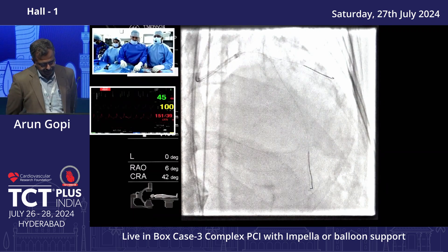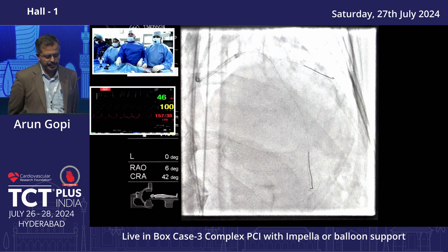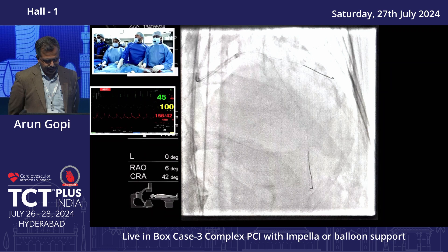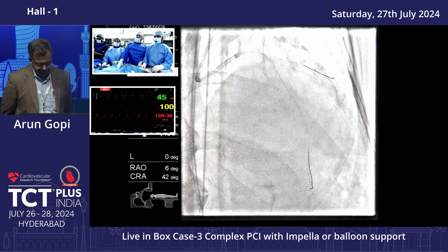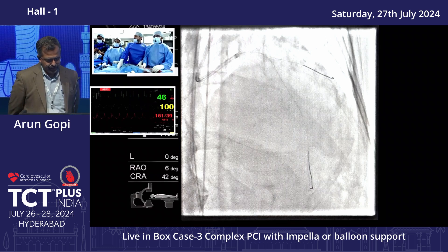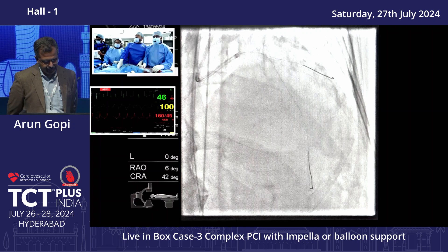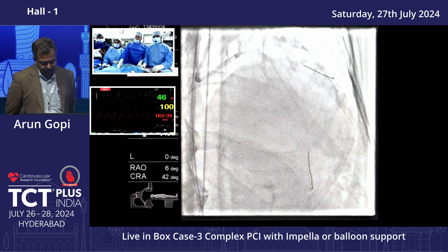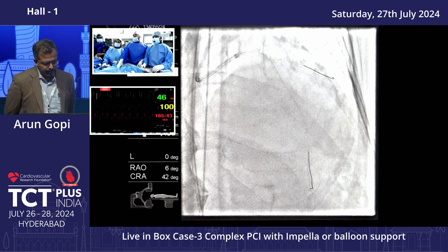We have prepared both the LAD and diagonal with a 2.75 cutting balloon at high pressures. The lesion is opening up well with no residual waist — the calcium has been adequately debulked. We see no waist at the ostium of the diagonal or LAD. OCT-wise, both diagonal and LAD are almost equal-sized vessels, both about 3.0 mm, and it is a typical 70-degree bifurcation angle. So we decided to do a DK mini culotte for this case.